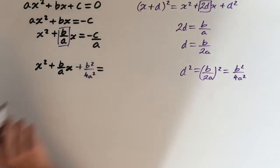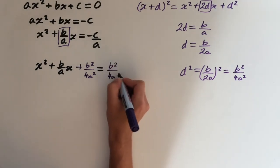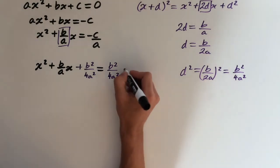And this equals b² over 4a² minus c over a.